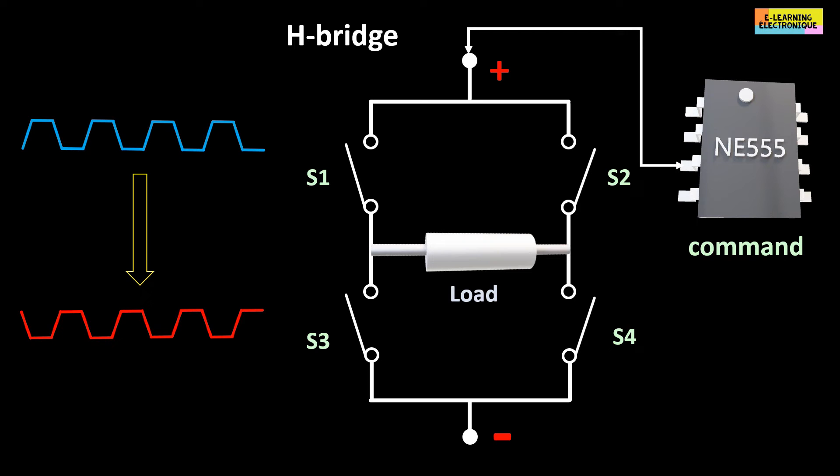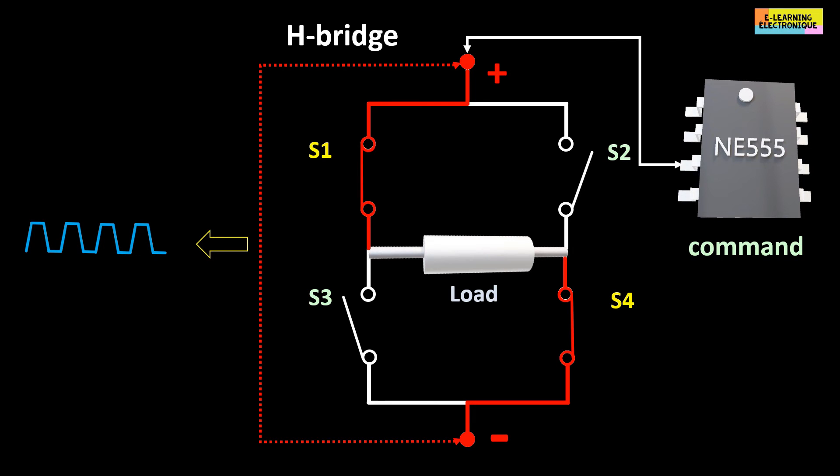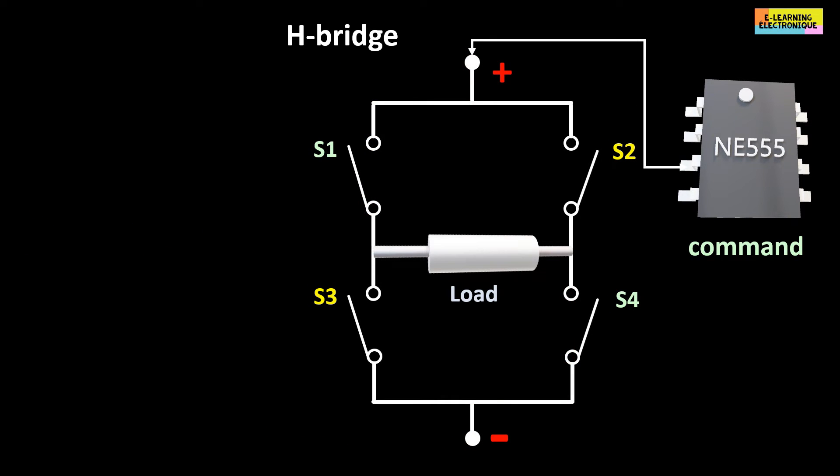If all four switches are open, there will be no voltage across the load. If switches S1 and S4 are closed simultaneously, S2 and S3 remain open, we obtain a positive current through the load. In the case where S1 and S4 are open and S2 and S3 are closed simultaneously, we obtain a negative current through the load.